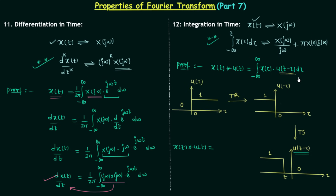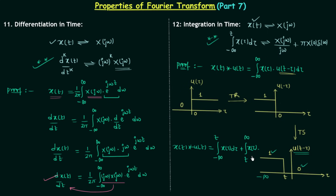Using the waveform of u(t−τ), we simplify the convolution integral. We break it into two parts: the first integration from minus infinity to t of x(τ)·u(t−τ) dτ — since u(t−τ)=1 here, x(τ) is multiplied by 1; and the second from t to infinity — since u(t−τ)=0 here, the integral is 0. So x(t)*u(t) equals the integration from minus infinity to t of x(τ) dτ.